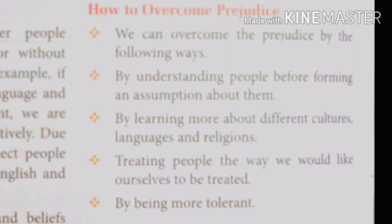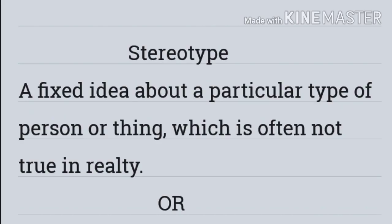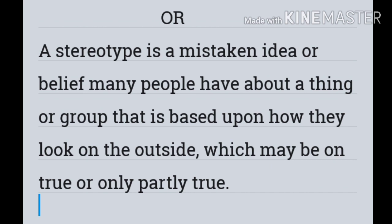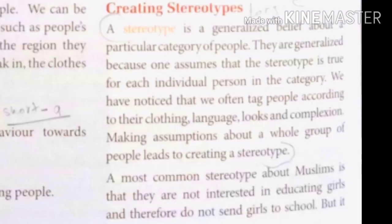What is a stereotype? A fixed idea about a particular type of person or thing, which is often not true in reality. A stereotype is a mistaken idea or belief that many people have about a thing or group, based upon how they look on the outside, which is untrue or only partly true. So, a stereotype is a generalized image or belief about a particular category, because one assumes that the stereotype is true for each individual person in that category.